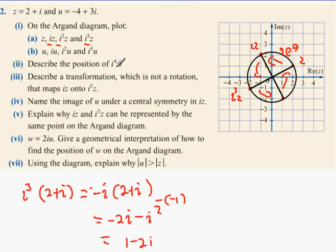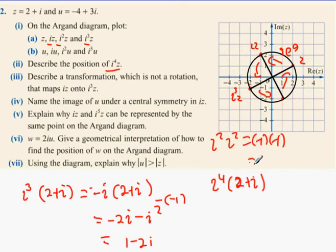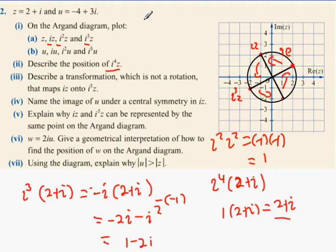So, describe the position of i⁴Z now. i⁴Z is i² × i², which is (-1)×(-1), which equals 1. So it's 1 times (2 + i), which is 2 + i. Remember, i⁴Z will be in the same position as Z. So it basically undergoes a full 360 degree rotation and starts back at the original point.